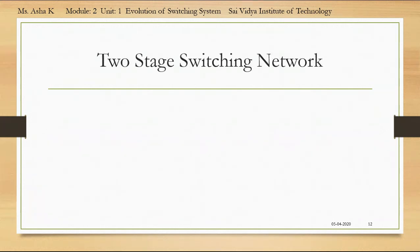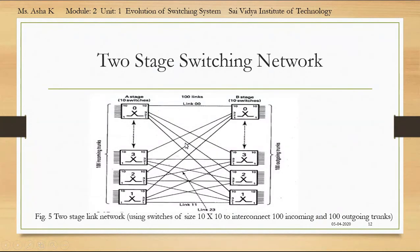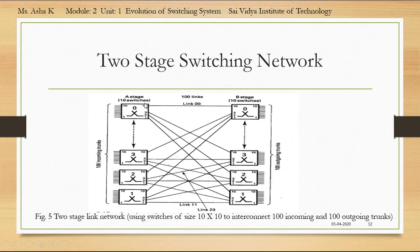Moving on to the two-stage switching network: we will analyze the interconnection of 100 incoming lines to 100 outgoing lines. The two-stage switching network consists of a primary stage and a secondary stage. The primary stage has 10 switches and the secondary stage also has 10 switches, with 100 links between the primary and secondary stages. Each switch is of size 10×10. The total number of switches is equal to 20. The interconnecting lines from primary switch to secondary switch are called links. Figure 5 shows the two-stage link network.